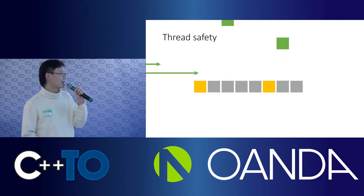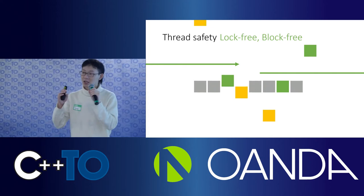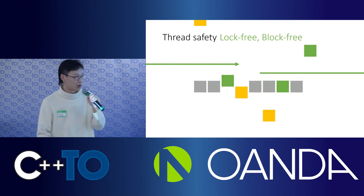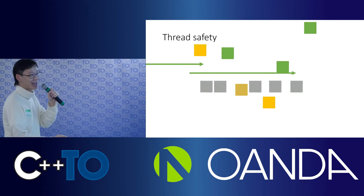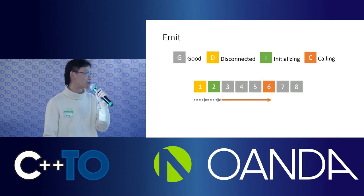The fundamental challenge we have is to make this thing thread-safe and non-blocking. By non-blocking, we mean all concurrent connect, disconnect, and emit calls should not wait for each other or synchronize in a global sequence. They should just pass through each other, like what the animation looks like.